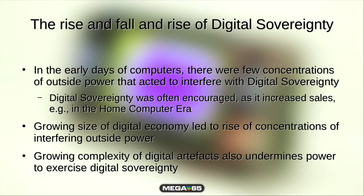This hasn't always been the case. In the early days of computers, they were largely digitally sovereign. If you bought a Commodore 64 in 1982, the documentation told you how to do a bunch of things. You could buy books with a disassembly of the entire operating system. Commodore didn't sue anyone for doing that because they knew it would sell more units if people could do more things with the computer. Things have changed with the growing digital economy and concentrations of power — large companies realized they can make more money by controlling the way people use things, which invariably means restricting what they can do.